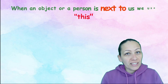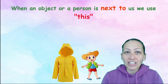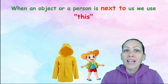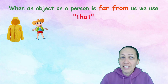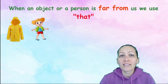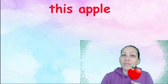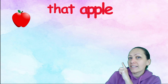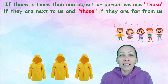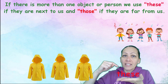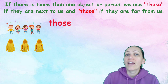As you have seen from the examples, when we're talking about an object or a person who is next to us, we're using 'this'. If an object or a person is far from us, we use 'that'. This apple or that apple. If there is more than one object or person, we use 'these' when they are next to us and 'those' when they are far away.